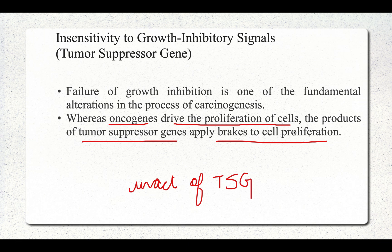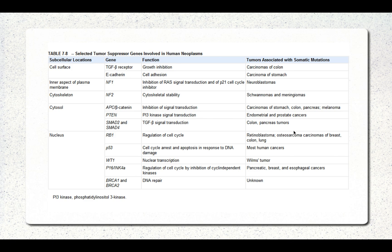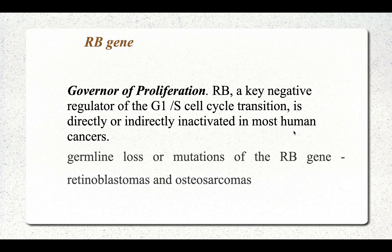There are many tumor suppressor genes: TGF-beta, E-cadherin, NF1, NF2, APC gene, RB gene, and P53 gene, among others involved in human carcinomas. The first very important tumor suppressor gene we'll discuss is the RB gene, also known as the retinoblastoma gene.